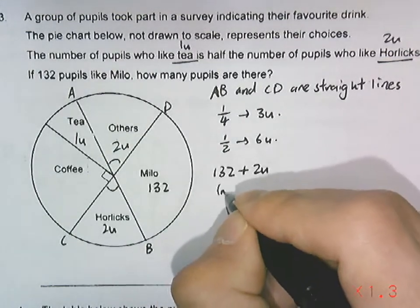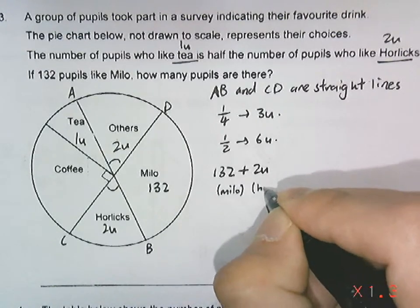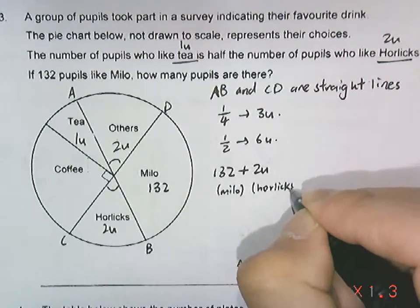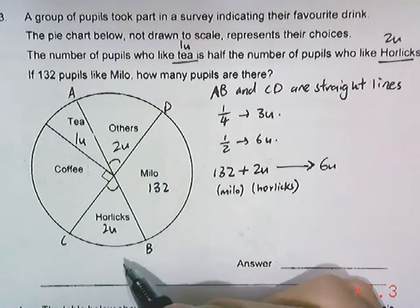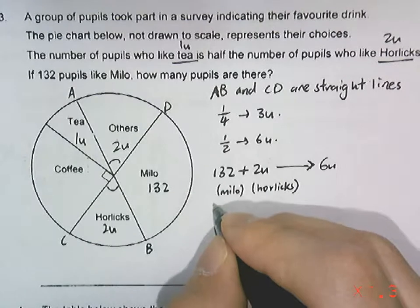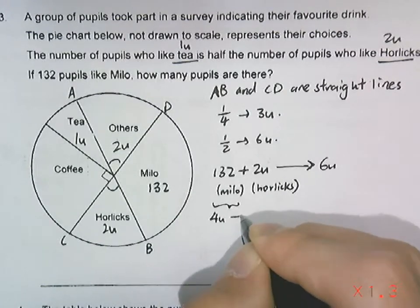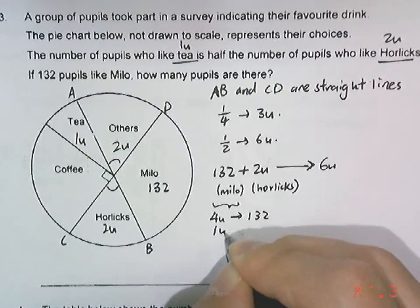This gives us total six units because it's half of the entire pie chart. So we can clearly see that this part will be four units. From 132 we can find one unit first.